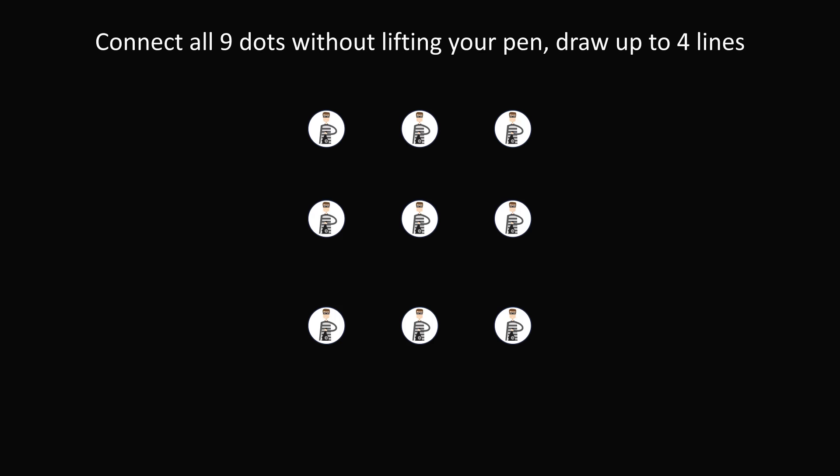Puzzle 7. Here's the classic nine dots puzzle. You have to connect all nine dots in this 3x3 grid without lifting your pen, using up to four lines. Most of you have probably seen this puzzle — if you try to draw four lines without lifting your pen, you'll end up connecting eight of the dots but miss one. The wonderful solution is to think outside the box.